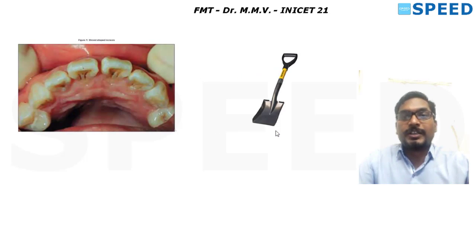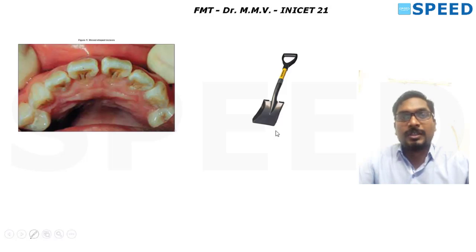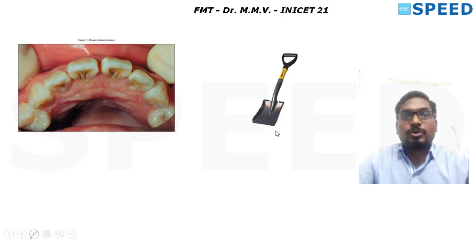The shovel-shaped incisor — like the shape of a digging shovel — refers to a characteristic concavity on the inner (posterior) surface of incisor teeth seen in Mongols. If the shovel shape appears on the anterior aspect as well, it is called a double shovel-shaped incisor — this was asked in PGI.